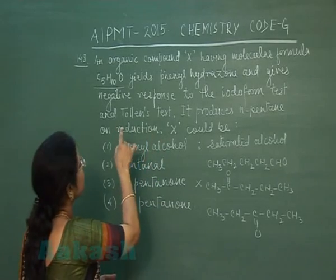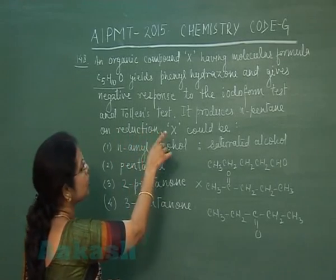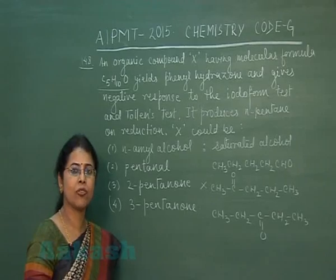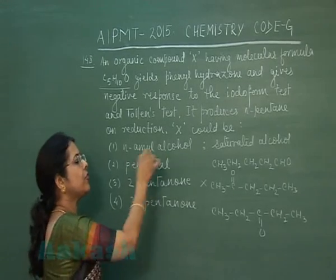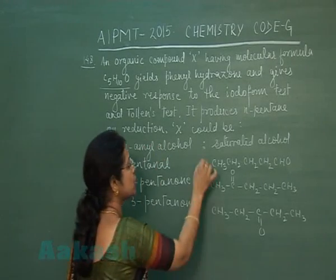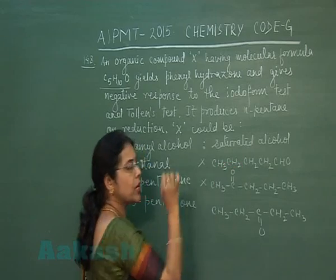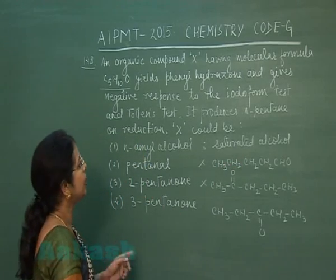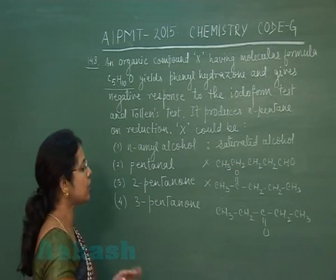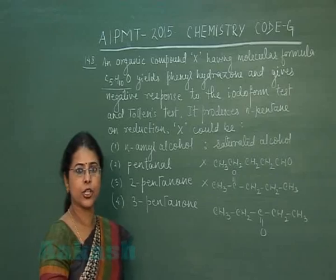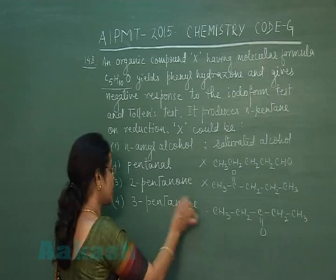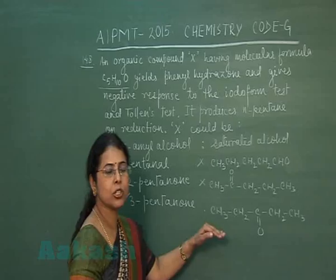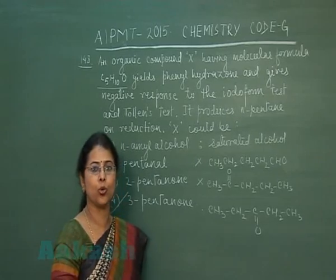It gives a negative response to the Tollens test. Tollens test is given by aldehydes. Since the response is negative, the compound cannot be an aldehyde — so pentanal is eliminated. It produces n-pentane on reduction. So the remaining option is the fourth option, 3-pentanone.